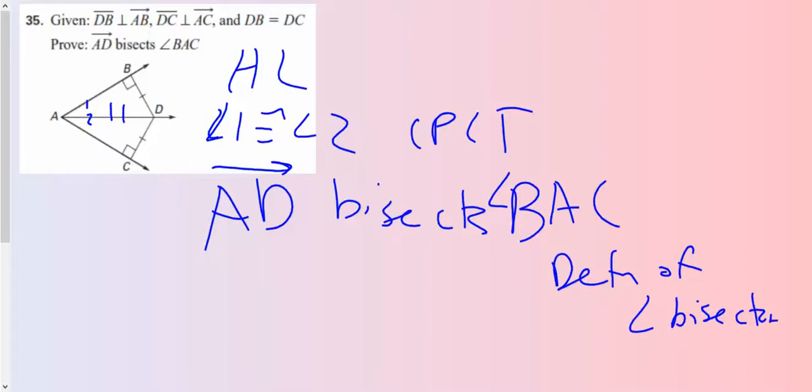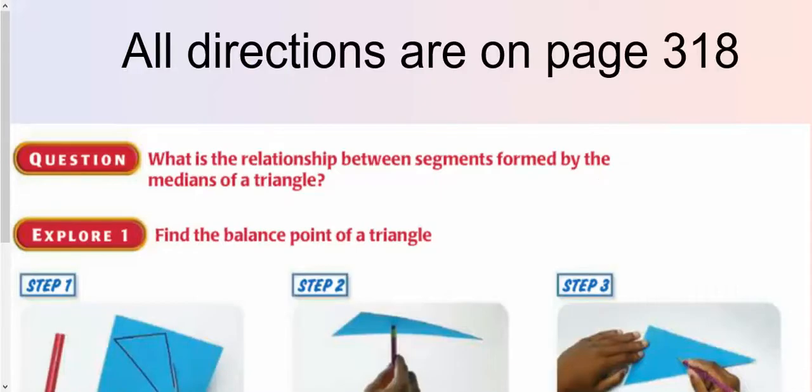And that is the definition of an angle bisector. So just one more step after the CPCTC part. So those should have been pretty straightforward triangle proofs for you guys. And then we can do this in class.